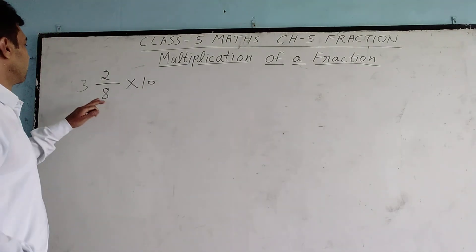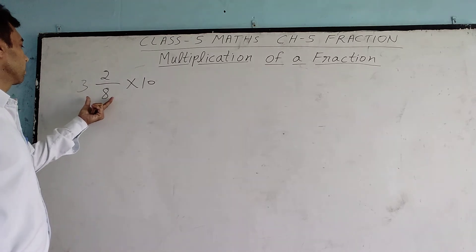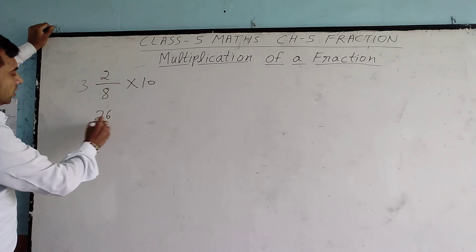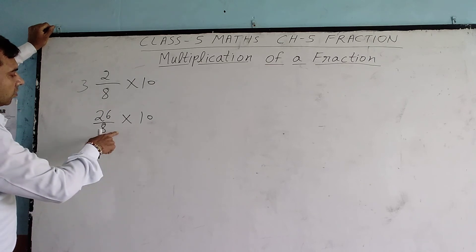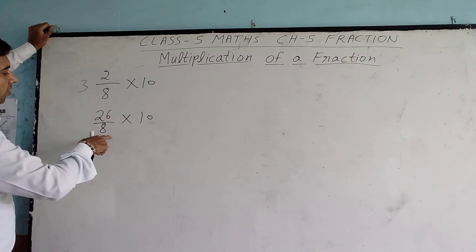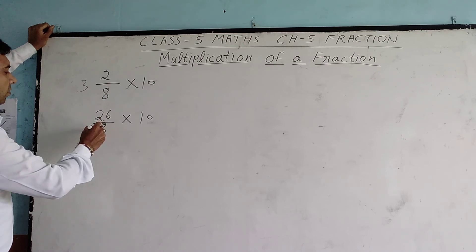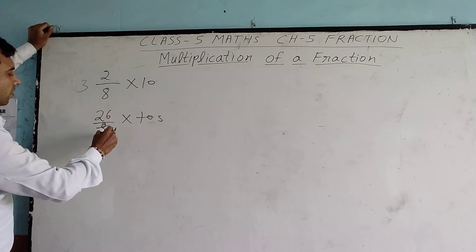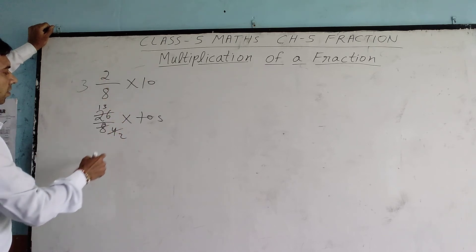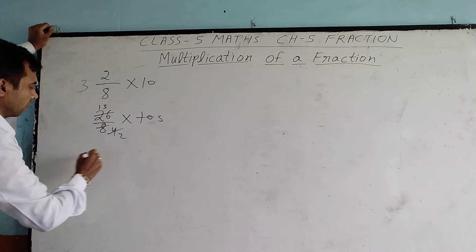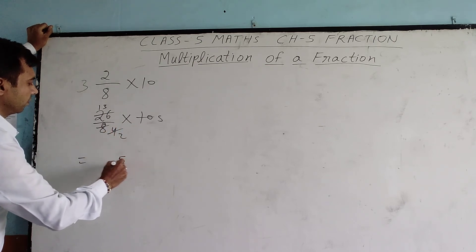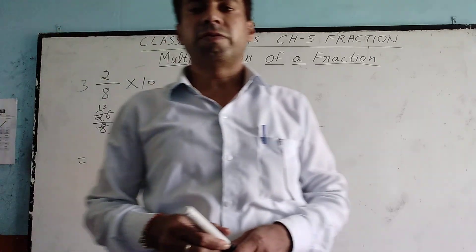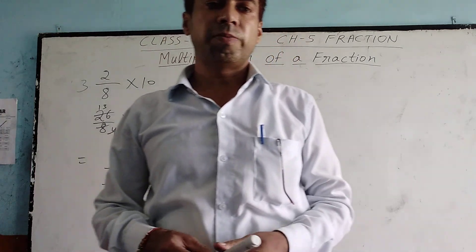Next question: we are multiplying the mixed fraction 8 and 3 by some number multiplied by 10. Converting the mixed fraction: 8 multiplied by 3 is 24, plus 2 gives 26. So 26 by 8 multiplied by 10. We reduce: 2 goes into 8 giving 4, and 2 goes into 10 giving 5. Then 4 goes into... we multiply 5 by 13 giving 65. So our answer is 65 by 2. In this way we multiply fractions. Multiplication of fractions is now complete. Thank you.